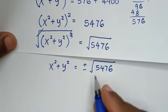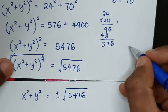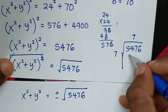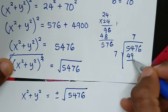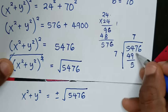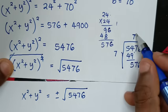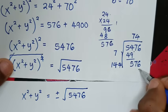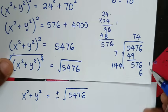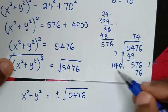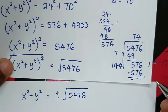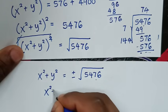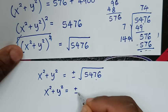Now let's find the square root of 5476. We get 74, since 74 × 74 = 5476. So x² + y² = ±74.